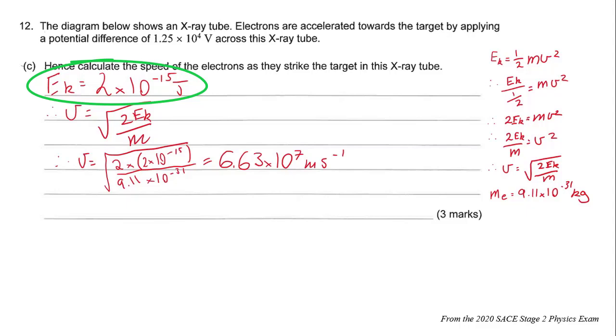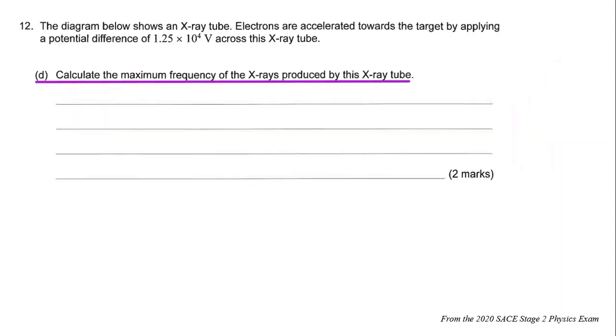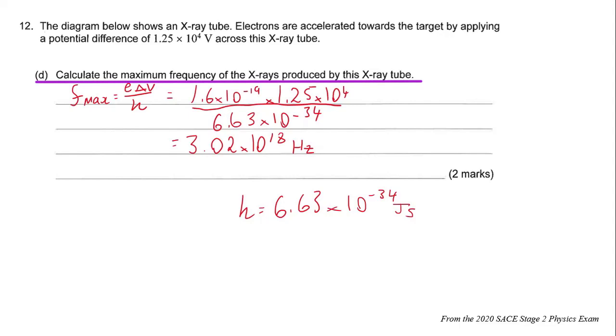Calculate the maximum frequency of the X-rays produced. Well that's just the f_max formula again, except you're going to need to involve Planck's constant, 6.63 × 10^-34 joule seconds. I'd just like to cover off on the units that we're looking at here.